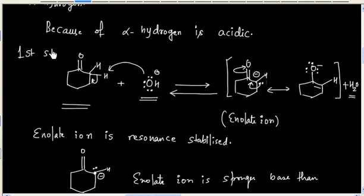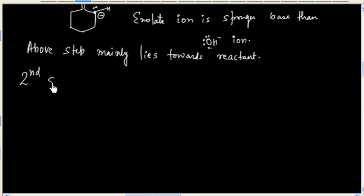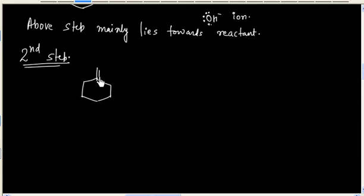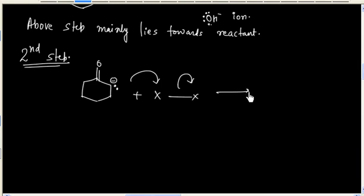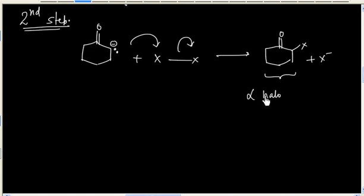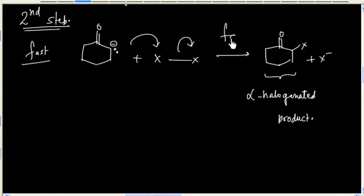The first step is the slower step. Now in the next step — the second step — the enolate ion will act as a nucleophile and will react with halogen. We will have the halogenated product, which is the alpha-halogenated product. The second step is the faster step and this step is not reversible.